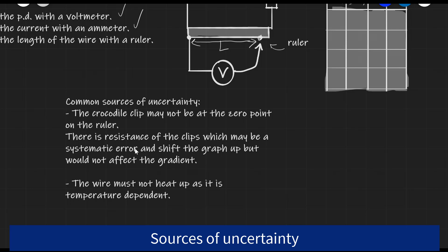Additionally, there is some resistance of the clips themselves, which would be providing a systematic error. Because there's a little bit of extra resistance, rather than the graph being a straight line through the origin in a graph of R against L, if there's extra resistance, the graph may be shifted upwards a little bit.